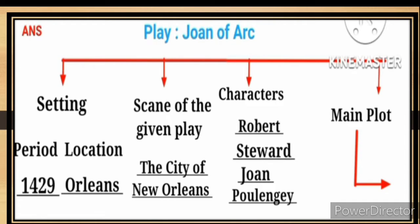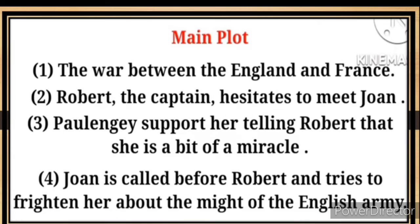Joan of Arc: setting period and location — 1429, location Orleans. Scene of the given play: the city of Orleans. Characters: Robert, Steward, John, Polly. Main plot: the war between England and France. Second: Robert the captain hesitates to meet Joan. Polly supports her, telling Robert that she is a bit of a miracle.